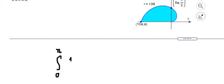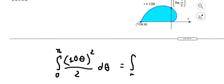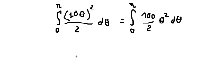The function is (10θ)² over 2, dθ. So we have the integral from 0 to π of 100 divided by 2, theta squared, dθ.